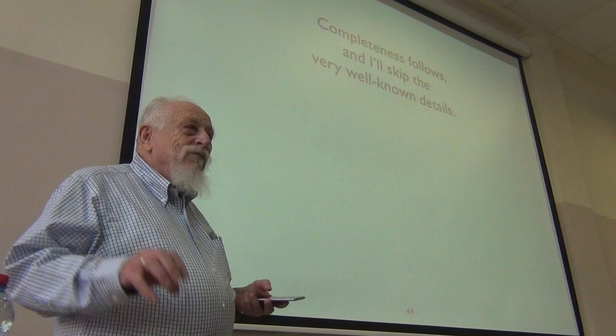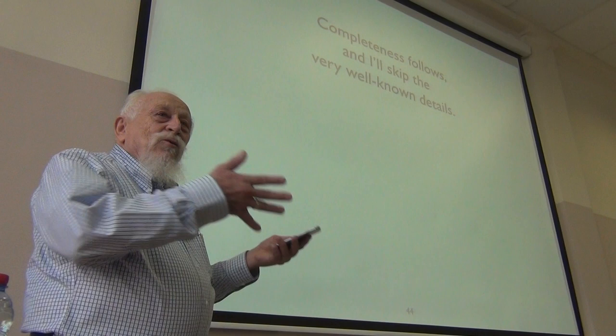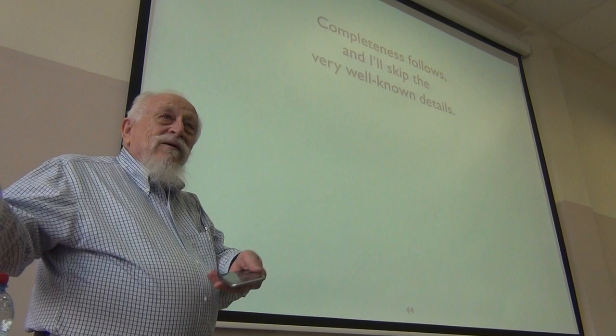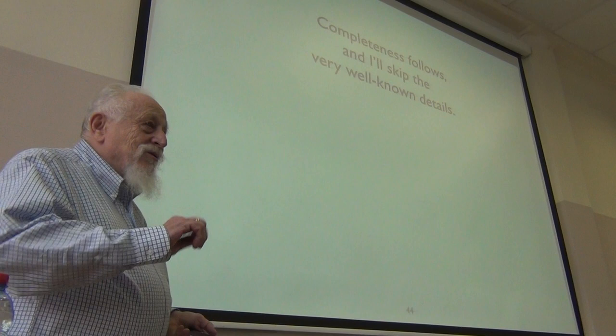So since this thing winds up being a model, if X is not provable, there's a maximally consistent set that leaves it out. And that's also a possible world and it will be false at that possible world in the model. So that's how you prove completeness.